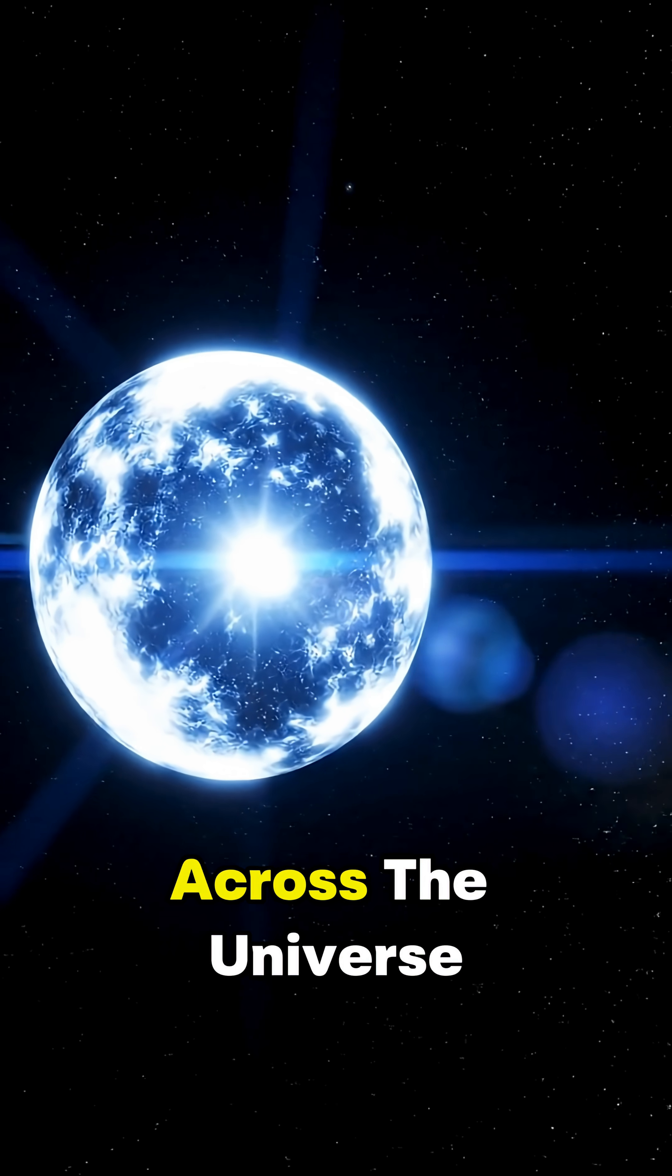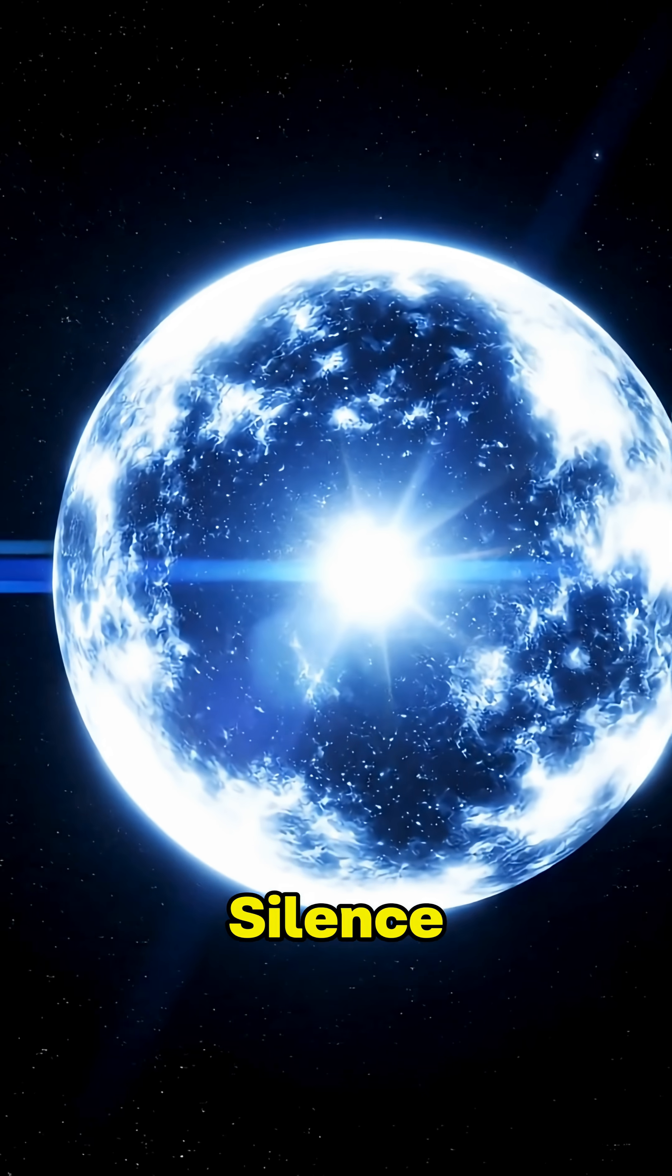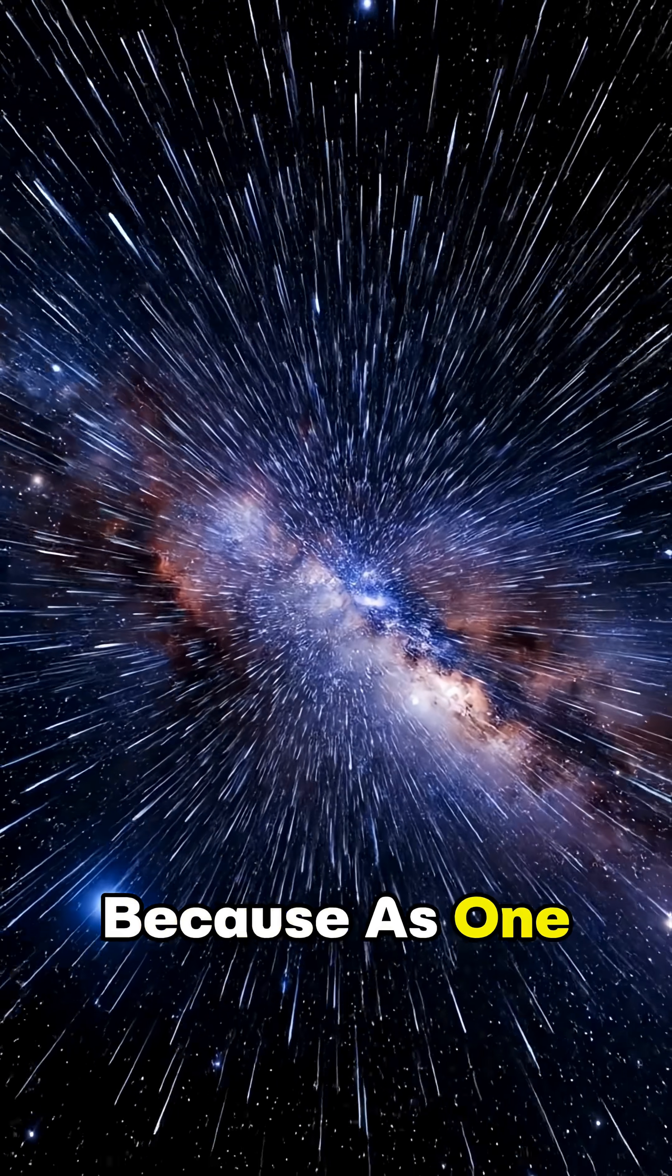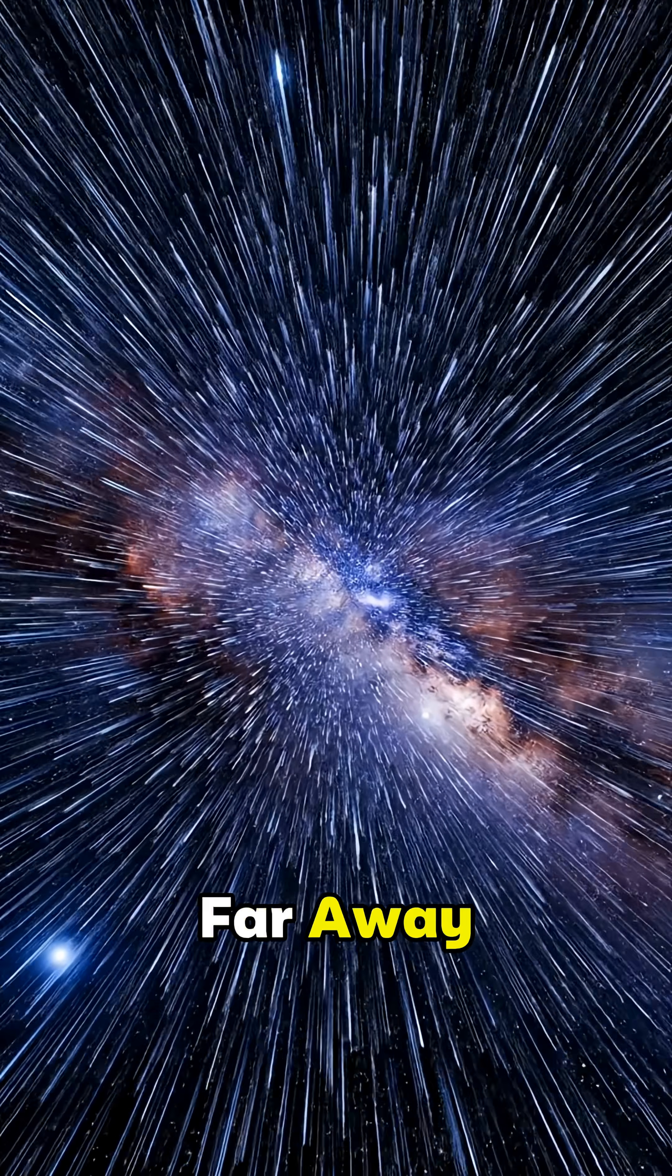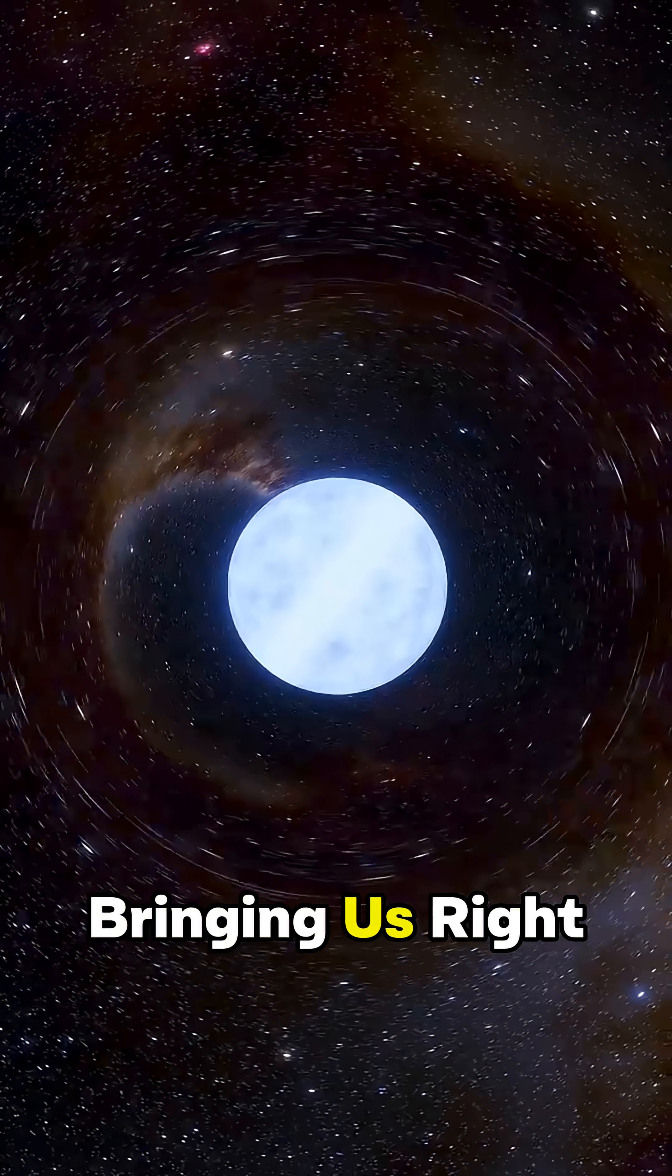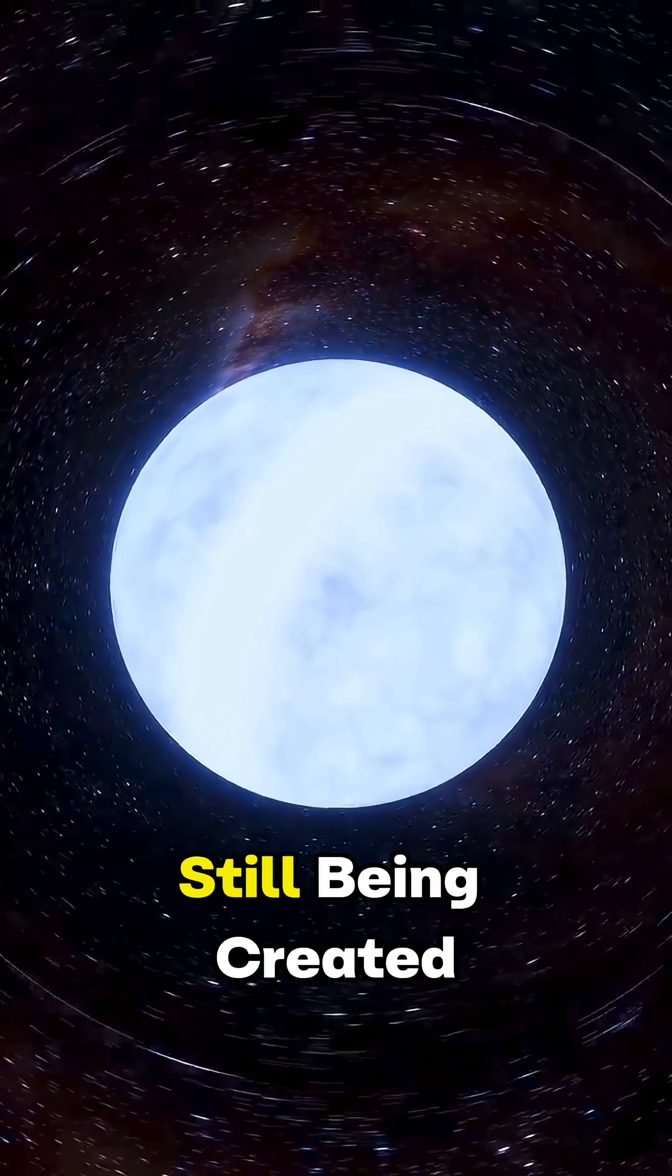And right now, across the universe, these perfect spheres are spinning in silence, untouched and unmatched, which is crazy to think about, because as one star dies somewhere far away, another impossibly perfect sphere may be forming, bringing us right back to the idea that the most perfect shape in space is still being created.